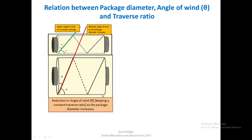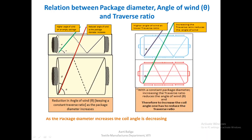This diagram explains the reduction in angle of wind when keeping a constant traverse ratio as the package diameter increases. Now let us consider keeping the diameter the same — how would traverse ratio and angle of wind affect each other?